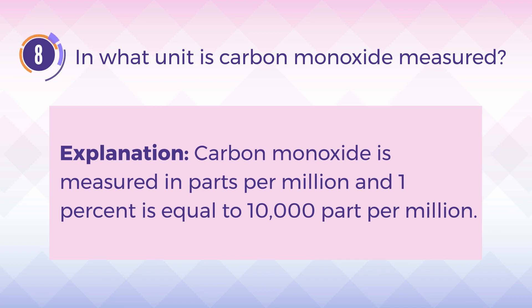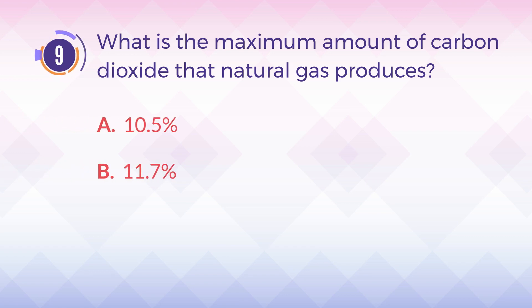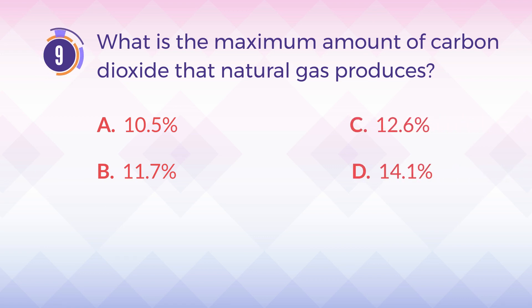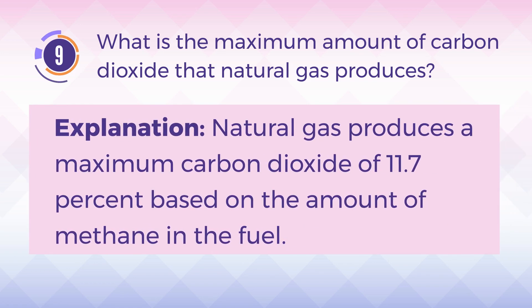Number 9. What is the maximum amount of carbon dioxide that natural gas produces? A. 10.5%. B. 11.7%. C. 12.6%. D. 14.1%. The answer is B: 11.7%. Natural gas produces a maximum carbon dioxide of 11.7% based on the amount of methane in the fuel.